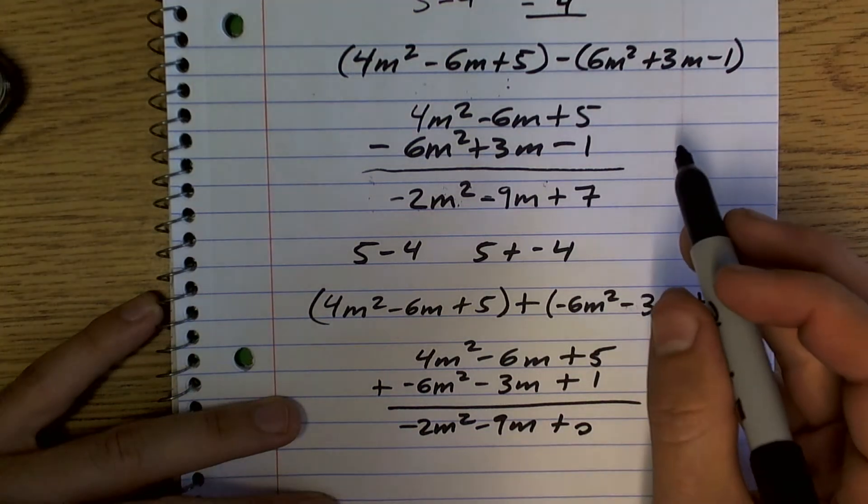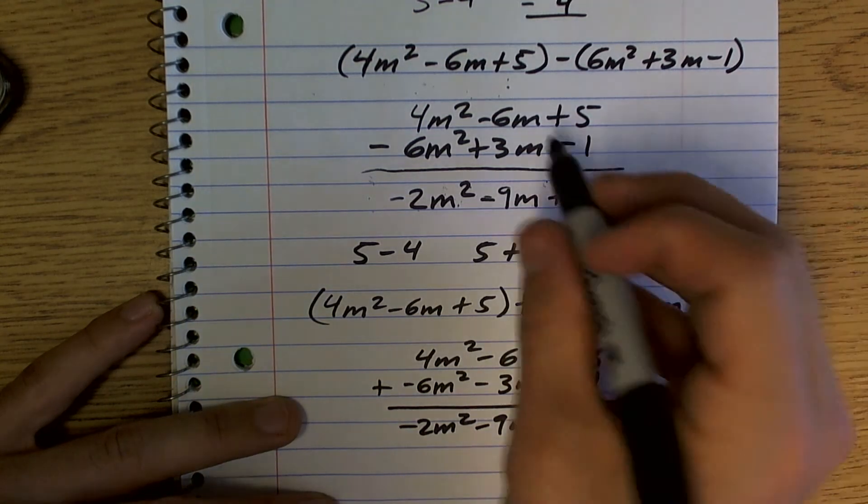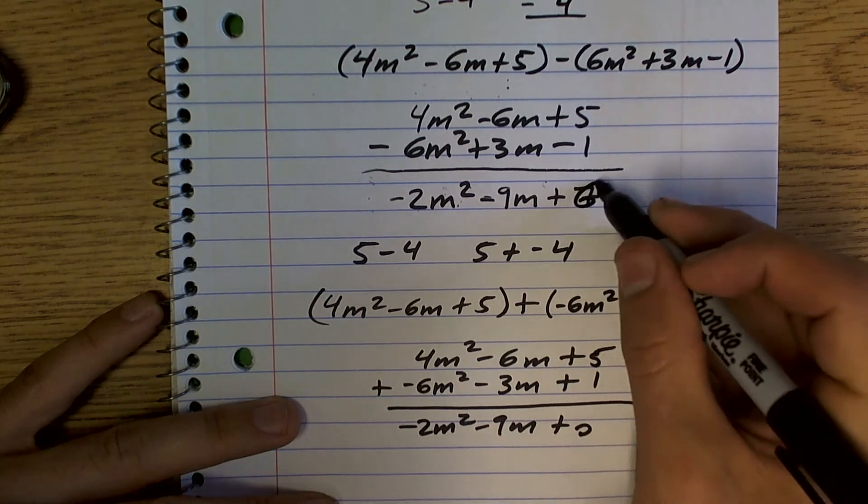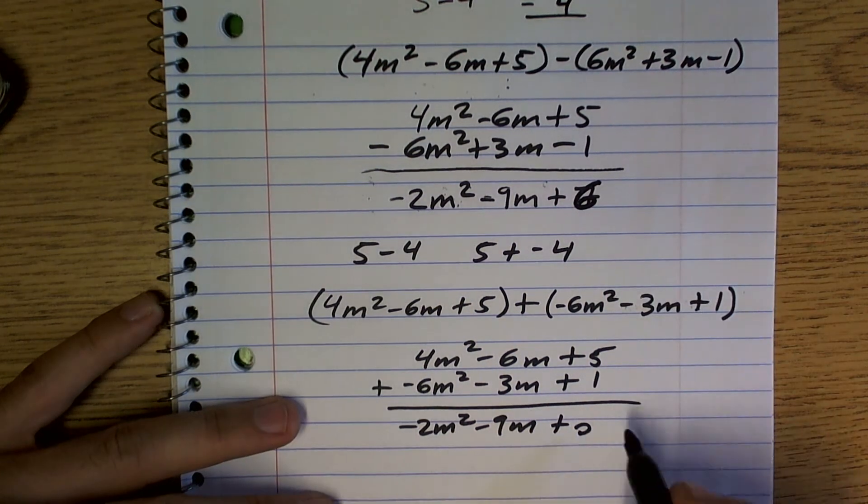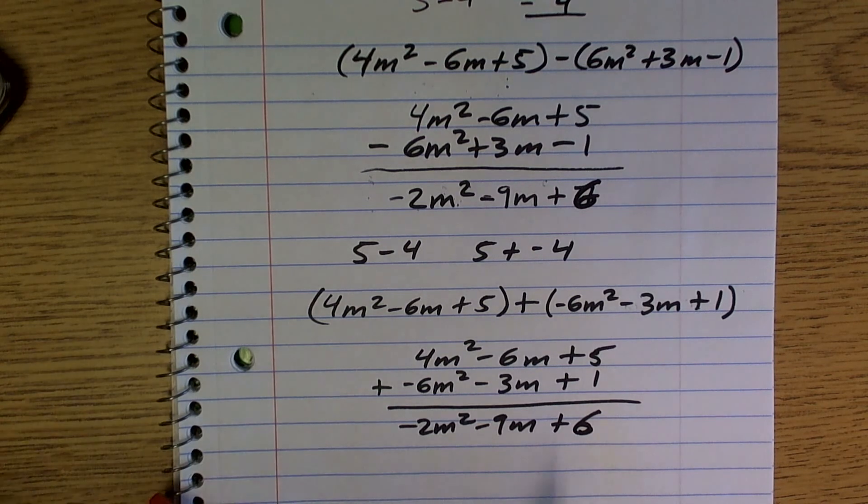Why am I getting different answers? What did I do? Oh, 5 minus negative 1 is 6. I don't know why I wrote that wrong here. And then this one becomes 6, too, right? Yep. There we go.